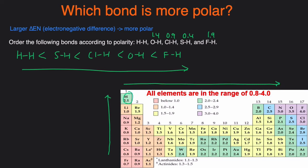So if we were to take a look at H-Cl and H-F, even if you didn't know the exact values, you know that F is more electronegative than Cl. So that's why H-F is going to be more polar than H-Cl.